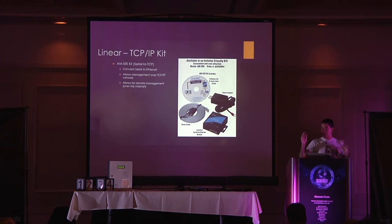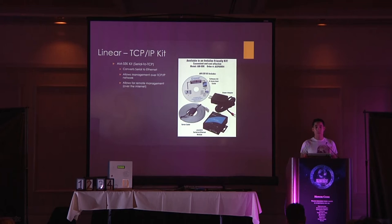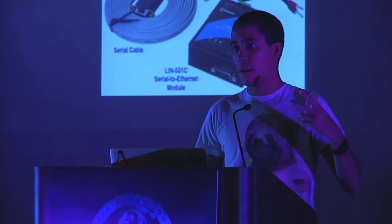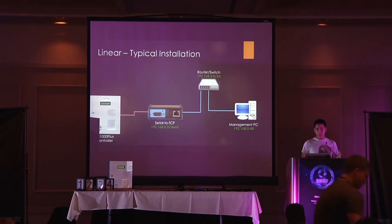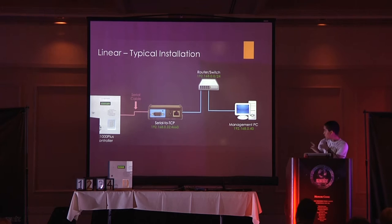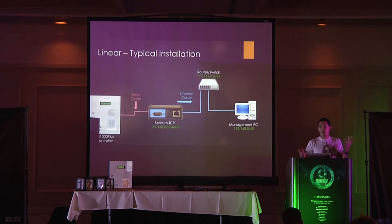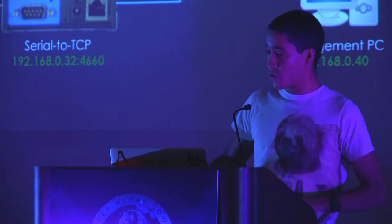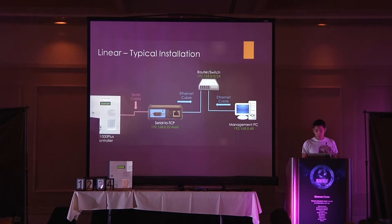This is the device used to turn a serial connection into a conventional TCP/IP connection. It's normally used in large installations to allow management to remotely monitor and control the access control system from wherever they are. In a typical installation, the AE-1000 Plus controller is hooked up through a serial cable to the serial-to-TCP device, which connects via Ethernet to a network router or switch. A management PC anywhere on the network — or even on the internet — can communicate with the controller, pushing new users to it or opening doors from the computer.